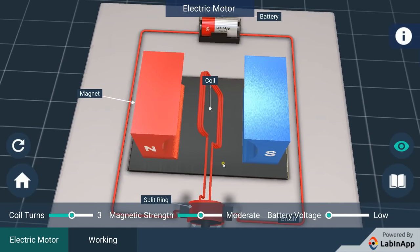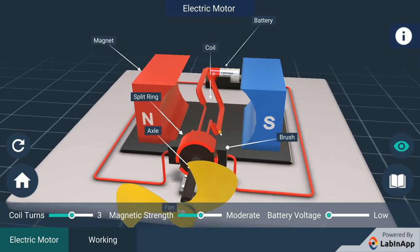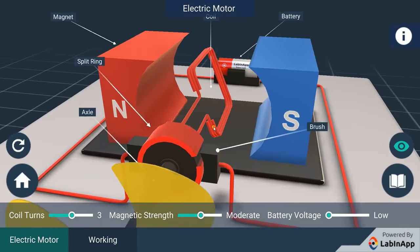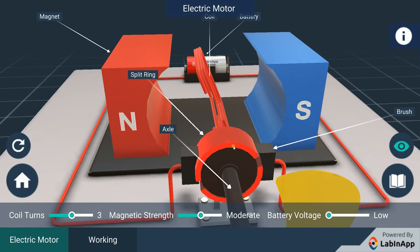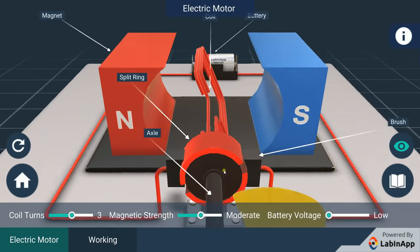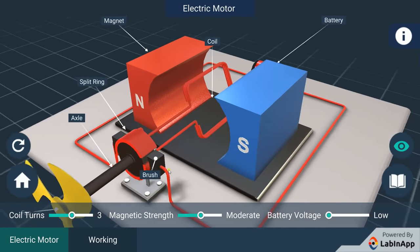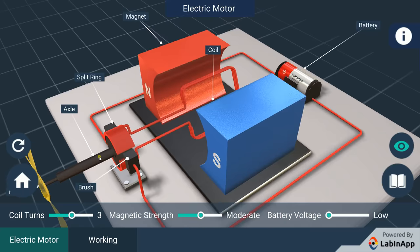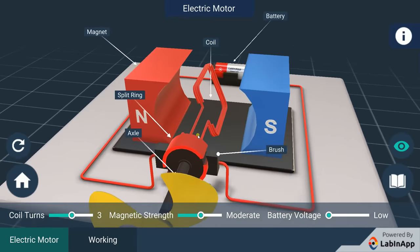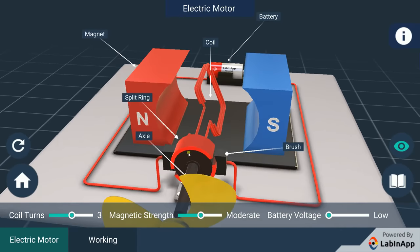The ends of the coil are connected to the two halves of a split ring. The inner sides of these halves are insulated and attached to an axle. The external conducting edges touch two conducting stationary brushes.